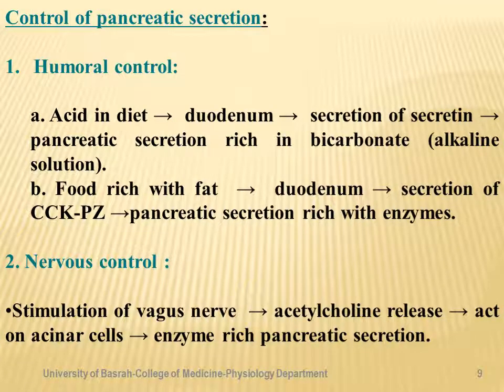Regarding control of pancreatic secretion, there is hormonal control and nervous control. For hormonal control: when acidic chyme reaches the duodenum, it stimulates the mucosal lining of the duodenum to secrete the hormone secretin. Secretin stimulates the pancreas to secrete pancreatic juice rich with bicarbonate, which neutralizes the acidity of the chyme.